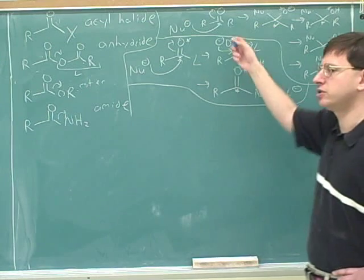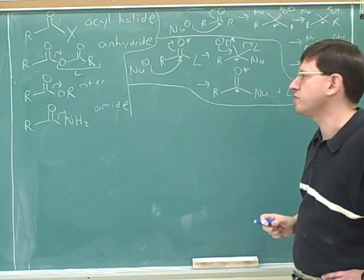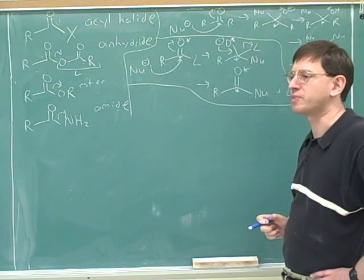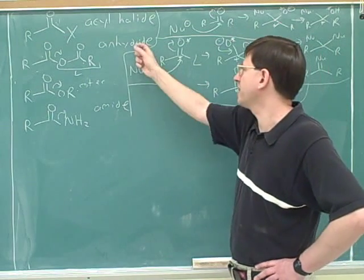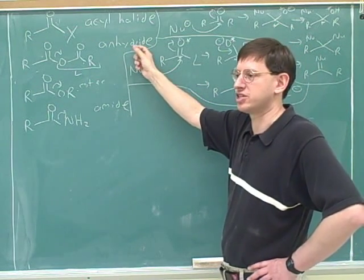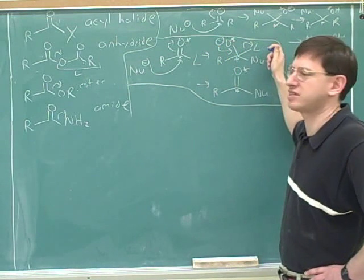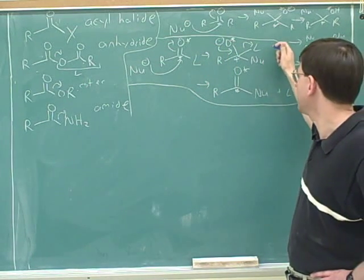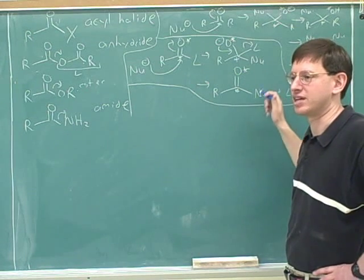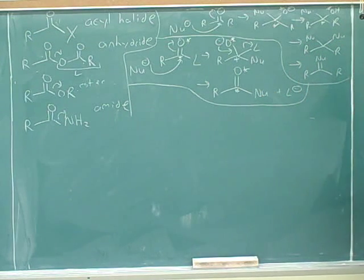The other complication is, even though there's only two steps, that means that there's three places where we can have protonations or deprotonations. Sometimes we need to protonate ahead of time to get things into good position. Then we might need to do a deprotonation after this step and then we might need to do another protonation before this step and another deprotonation. So there could be protonations and deprotonations before and after the steps.